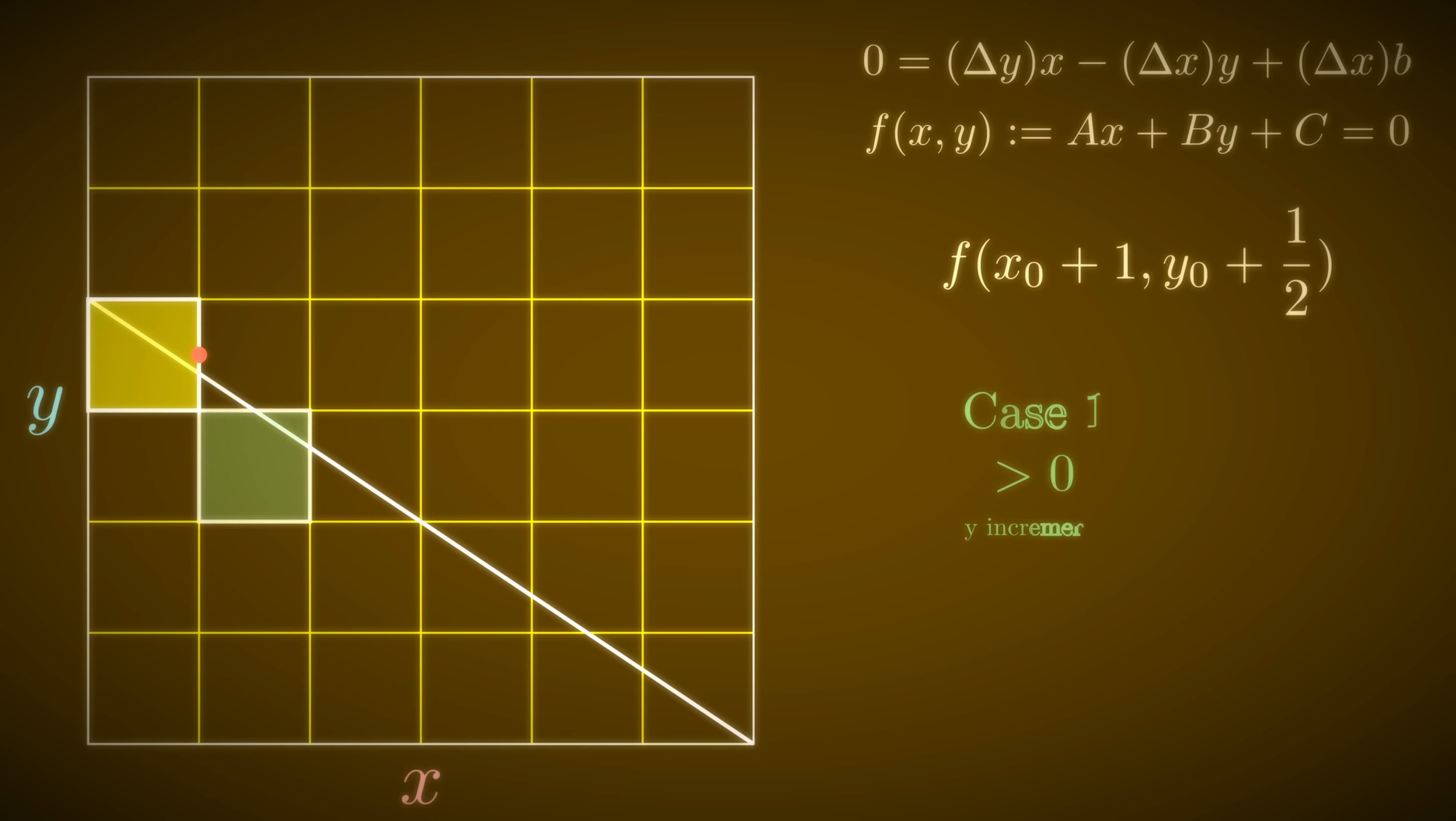Conversely, if the result is less than zero, our ideal line is above our candidate point. Let's call this case 2. If we repeat this step until we reach our endpoint, we get a Bresenham line.